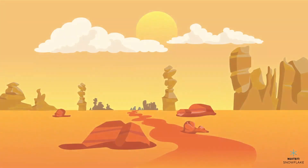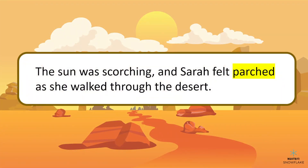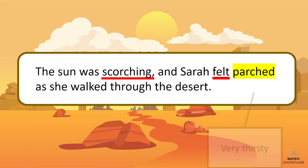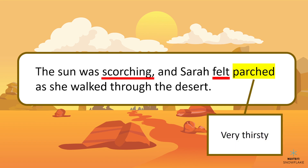The sun was scorching and Sarah felt parched as she walked through the desert. What does parched mean? We know that it's something Sarah felt, and that it was really hot because the sun was scorching. So we can use the context clues to figure out that parched means very thirsty.